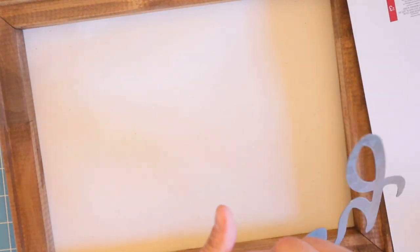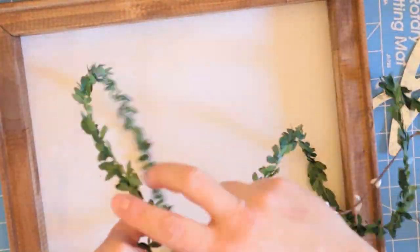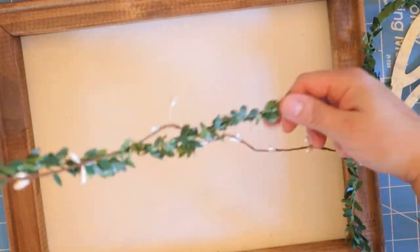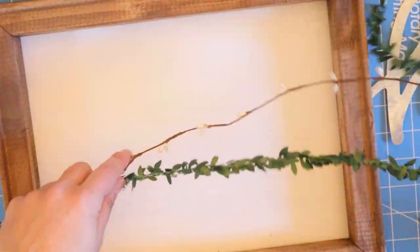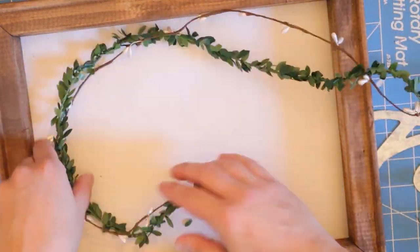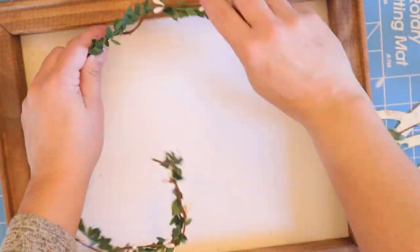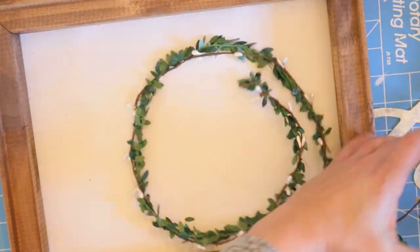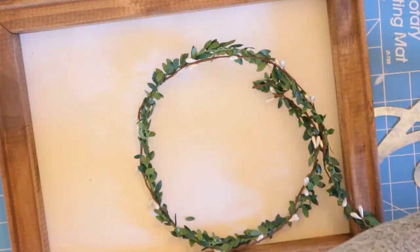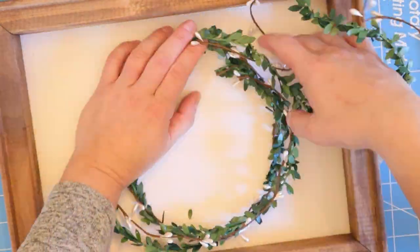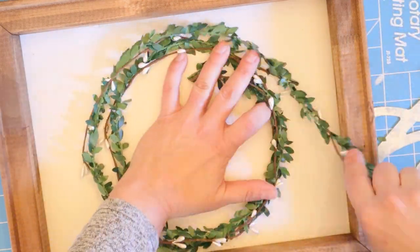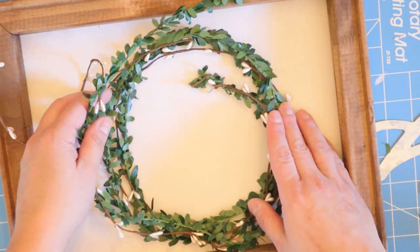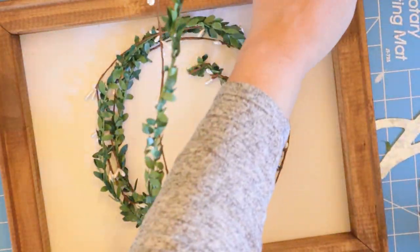I have this sign here from the Target dollar spot, I think last year, and I never used it. So I thought it was the perfect piece to use. I'm just deciding how I wanted to position it on my canvas. My idea here was I really love those prints with that really natural looking vine or leaf, grapevine type of a wreath.